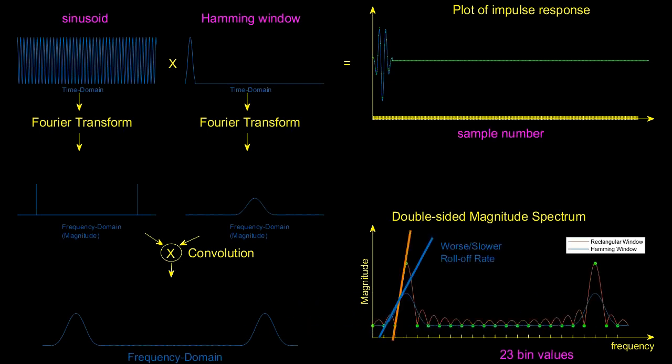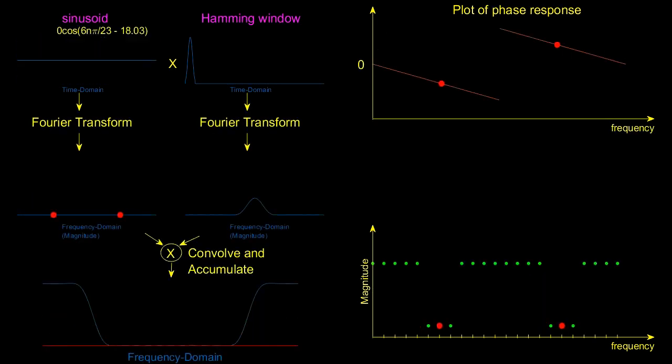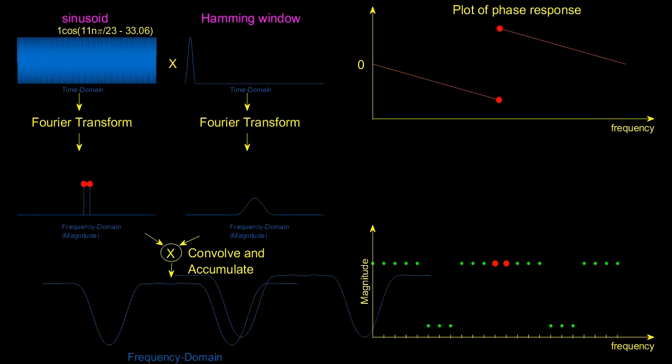You can use the same approach with the band reject filter we started with to get a reduction in the ripples as well. Once again you'll notice a difference in the roll off rate.